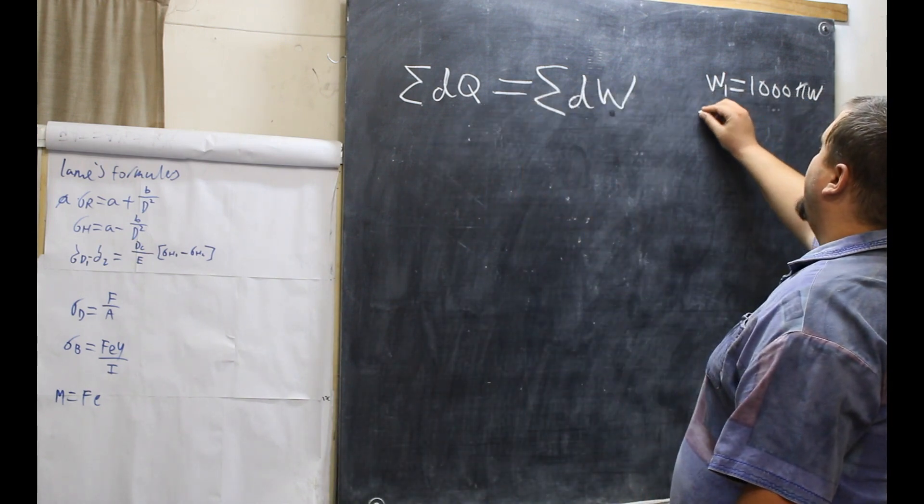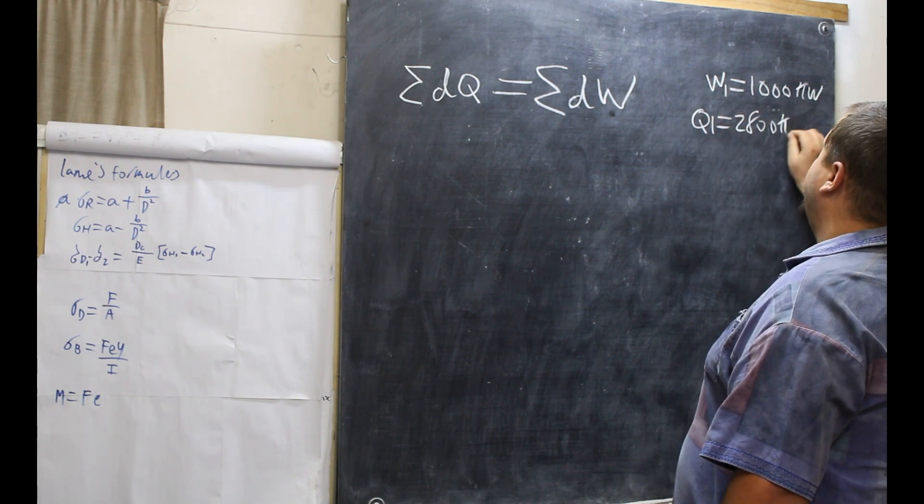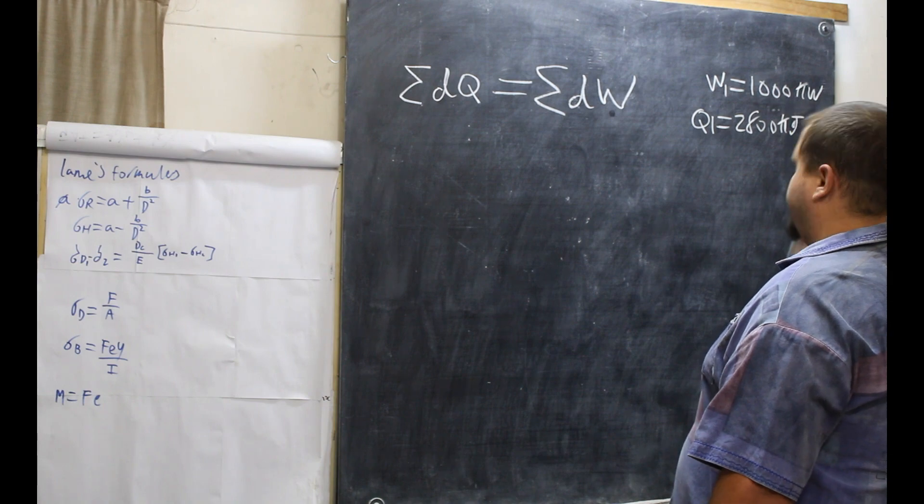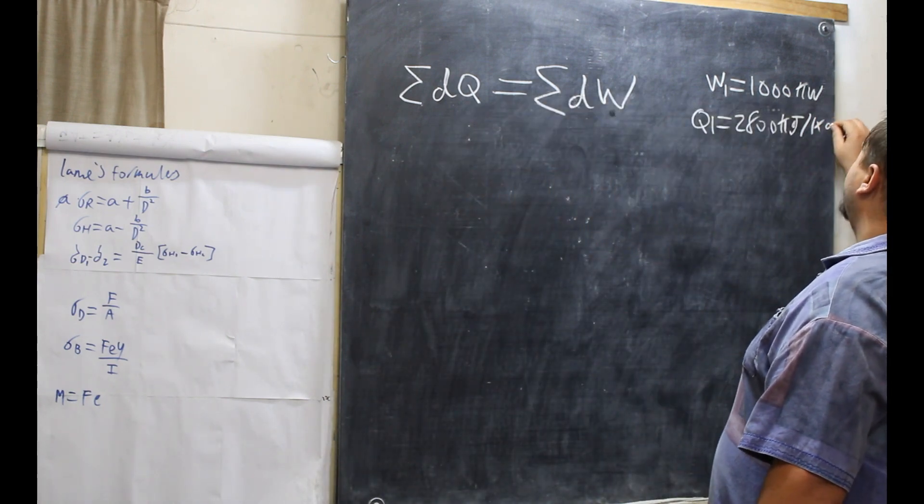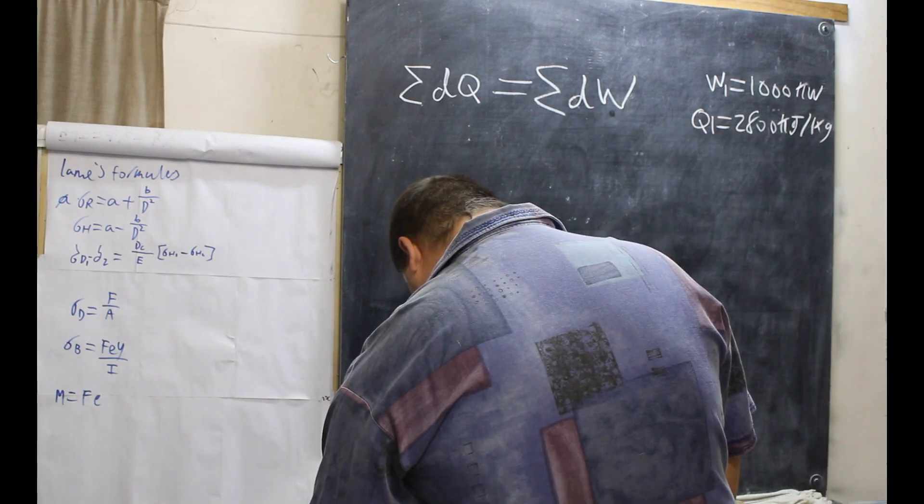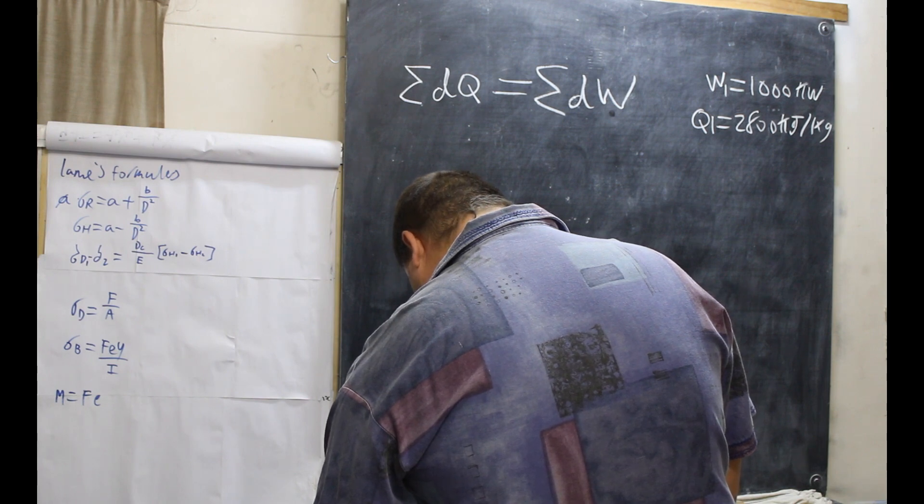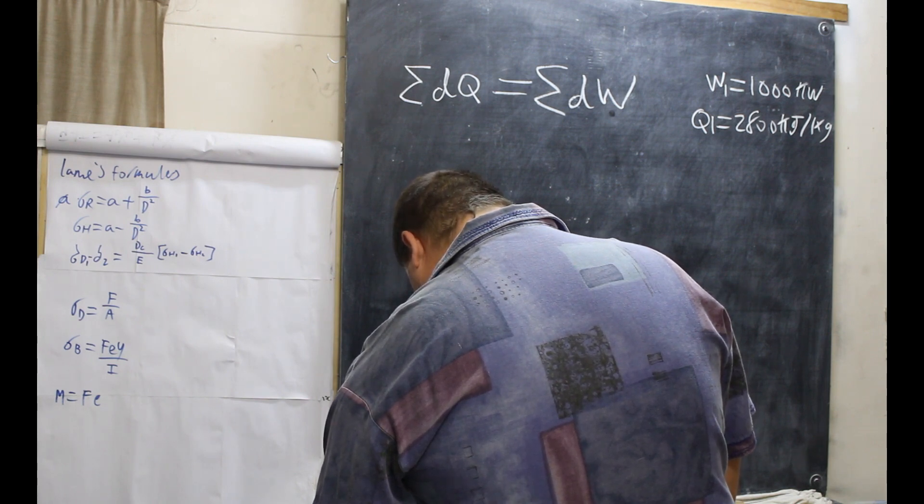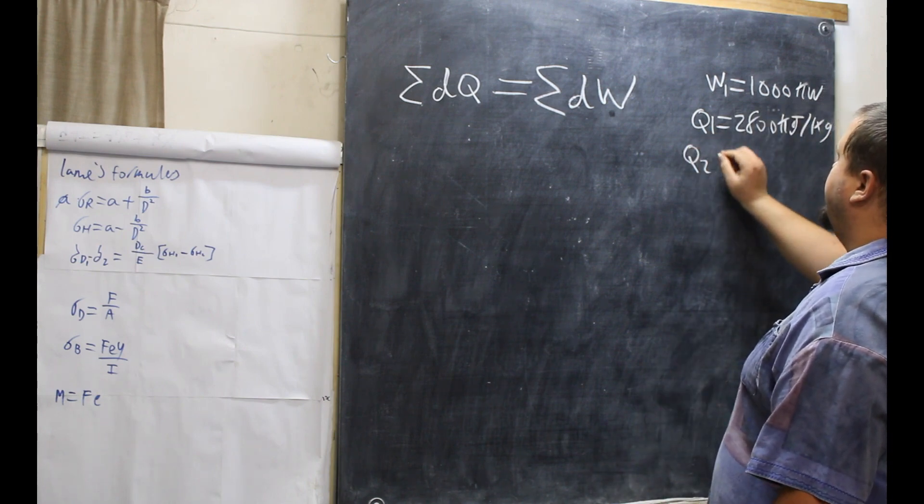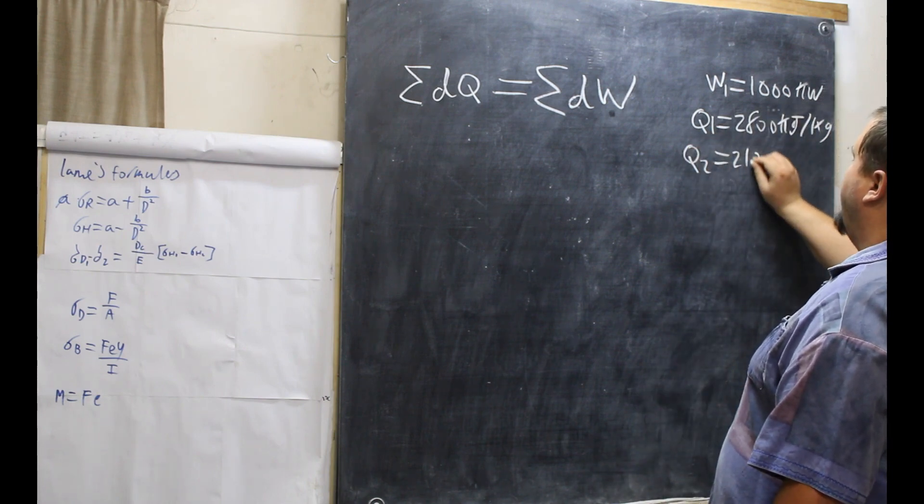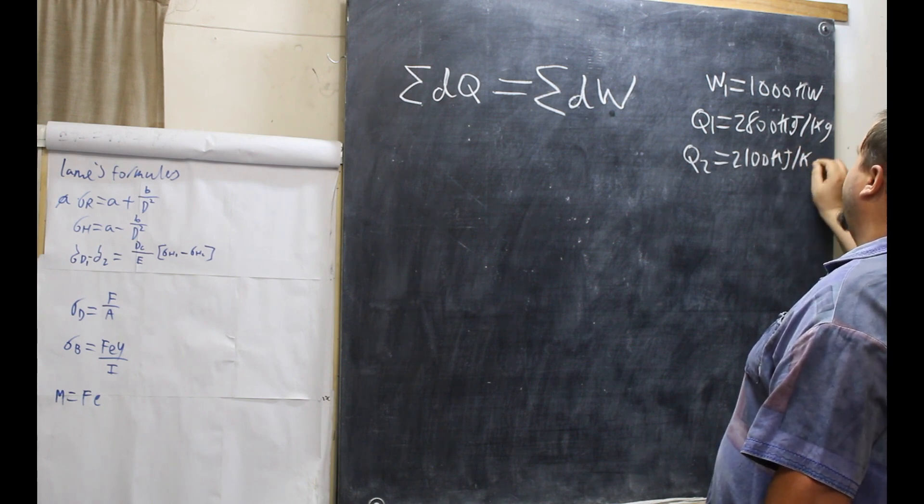The heat applied to the steam in the boiler is 2800 kilojoules. So Q1 is 2800 kilojoules per kg. The heat rejected by the system to the cooling water in the condenser is 2100 kilojoules.